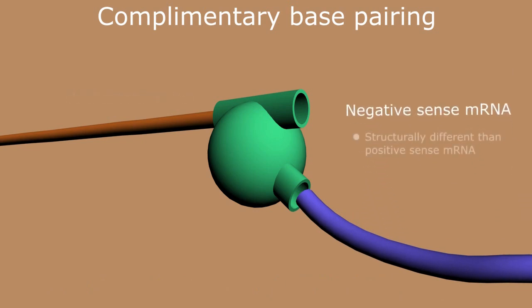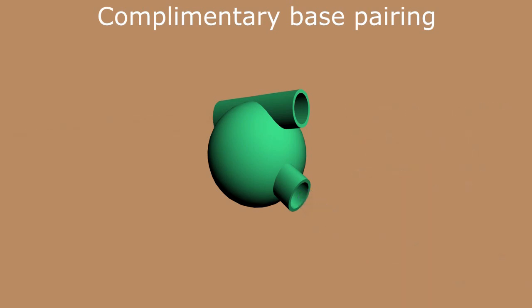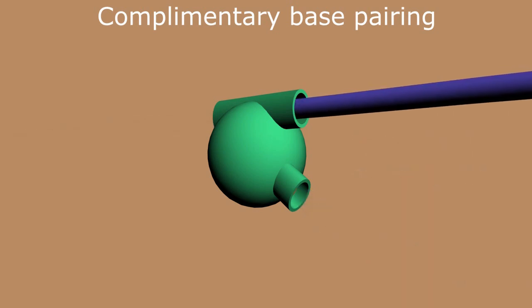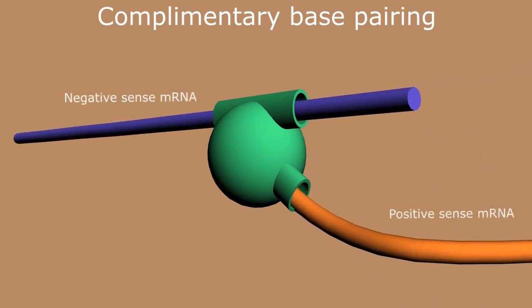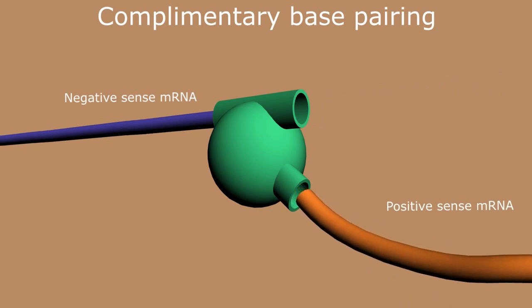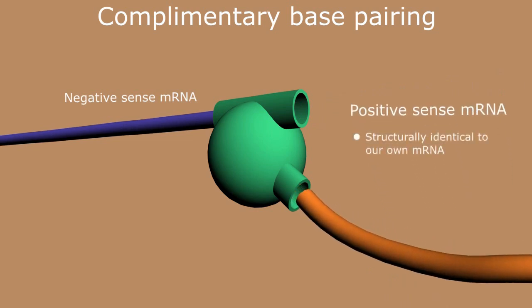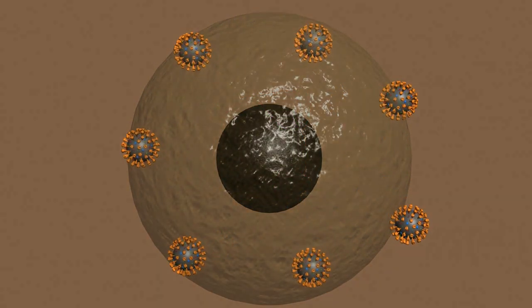Because of structural differences, the negative-sense strand of messenger RNA cannot be read by our ribosomes to produce viral proteins, but can be read again by the RDRP protein enzyme to produce a complementary positive-sense strand of RNA. This copy is again structurally identical to our own messenger RNA, and therefore can be read by our ribosomes to produce additional copies of both RDRP and viral particles, thus turning our infected cells into virus factories.